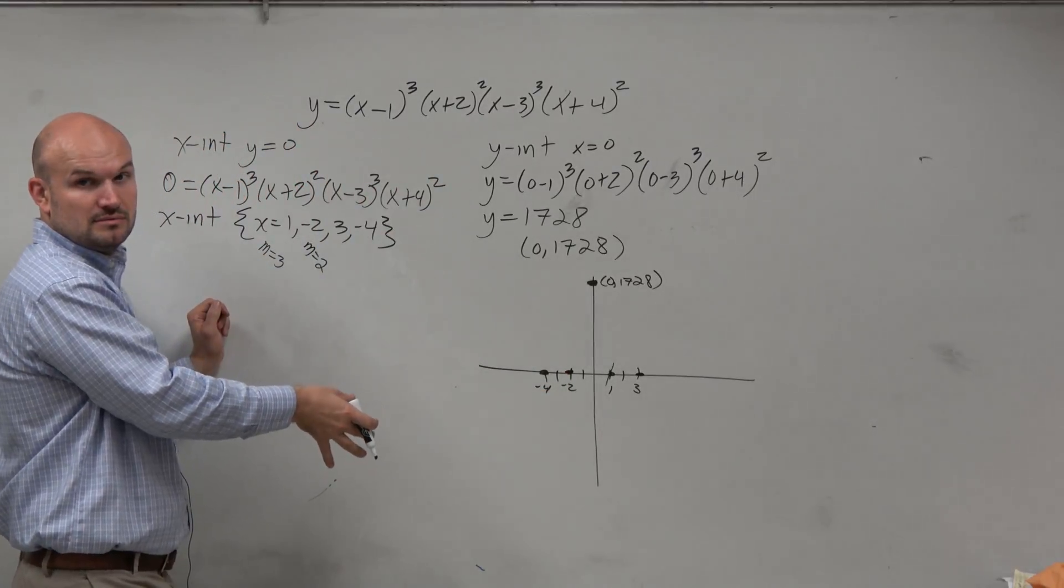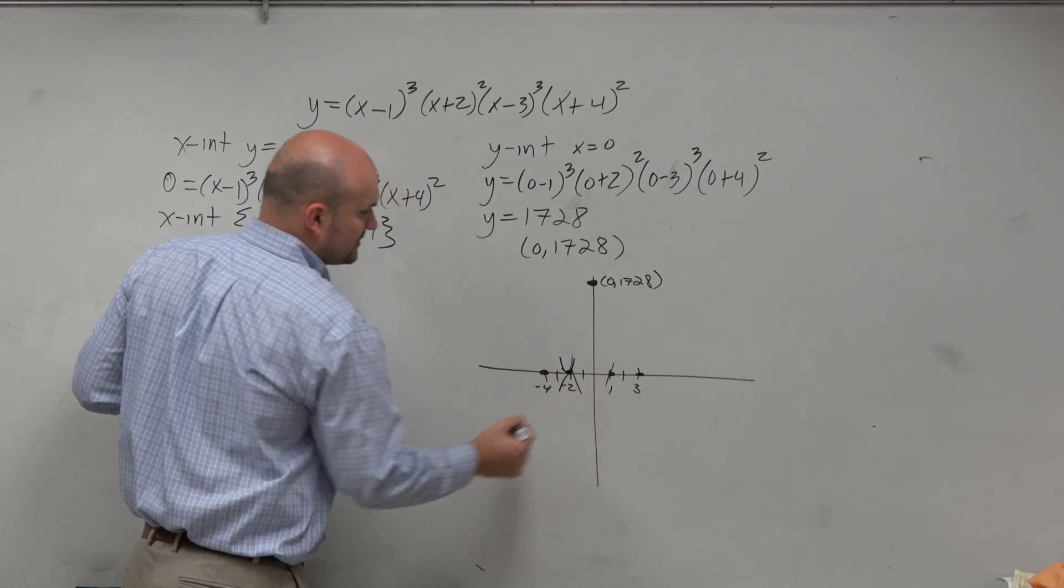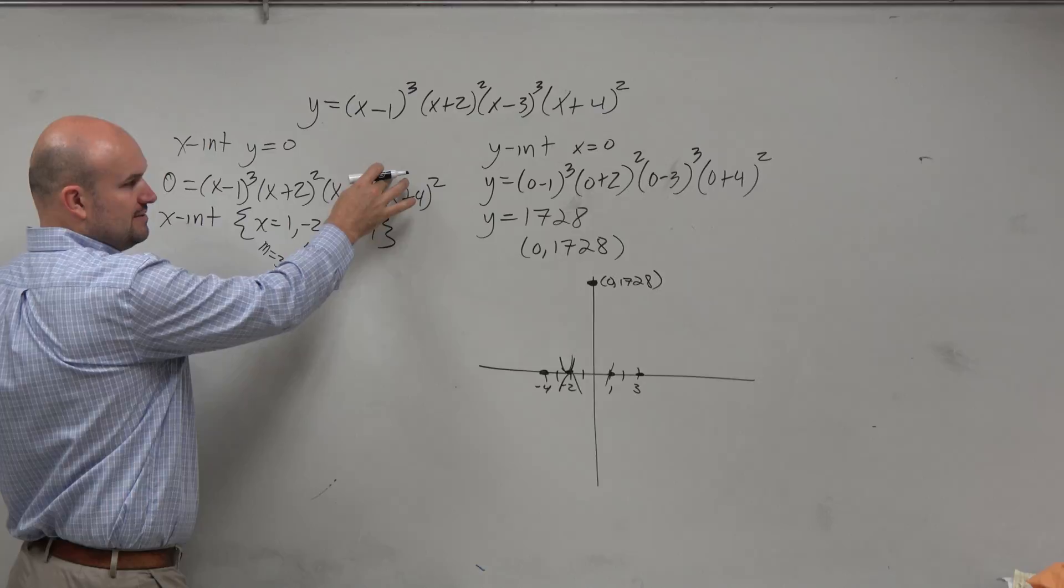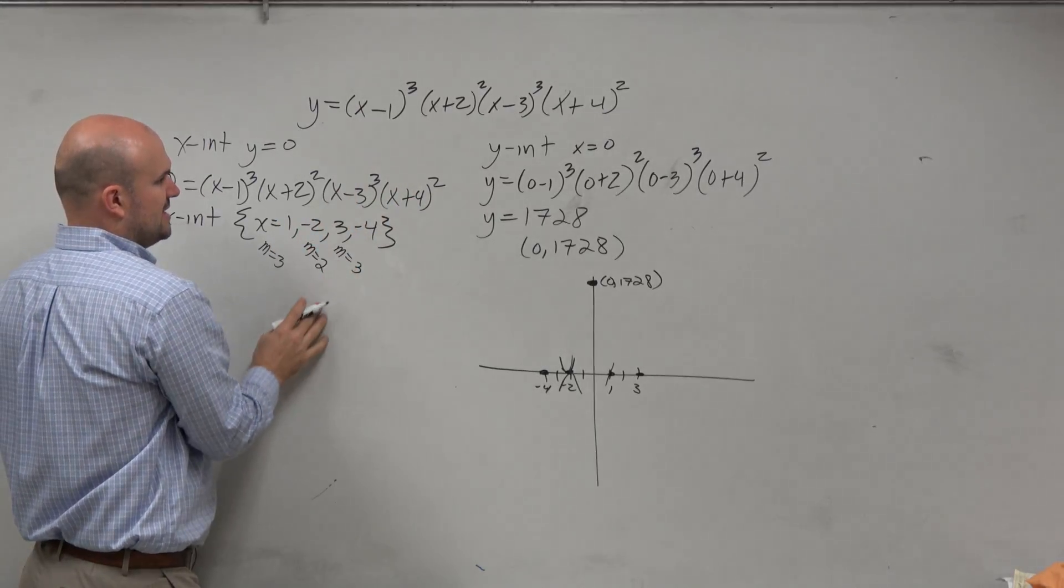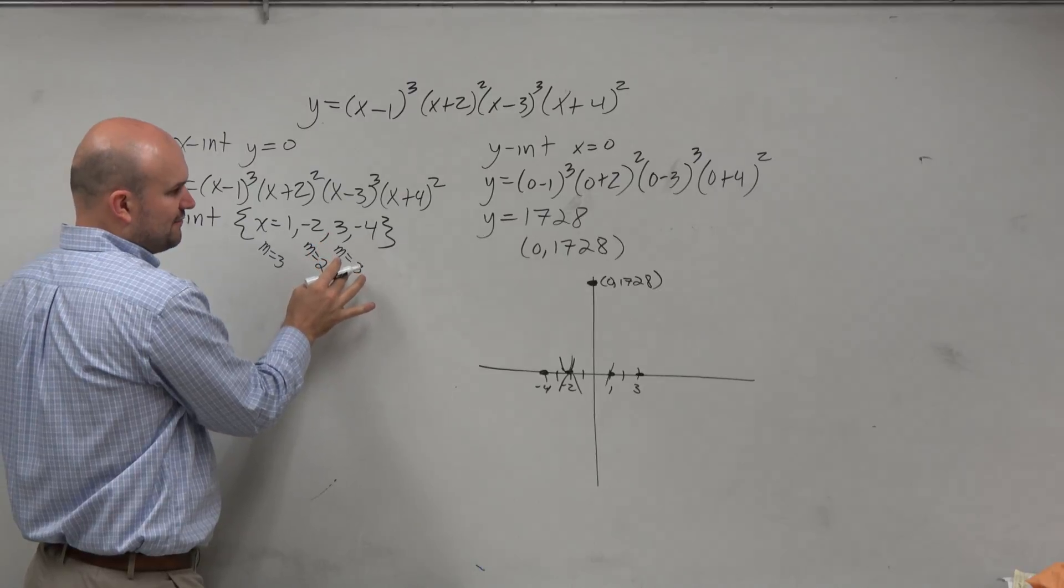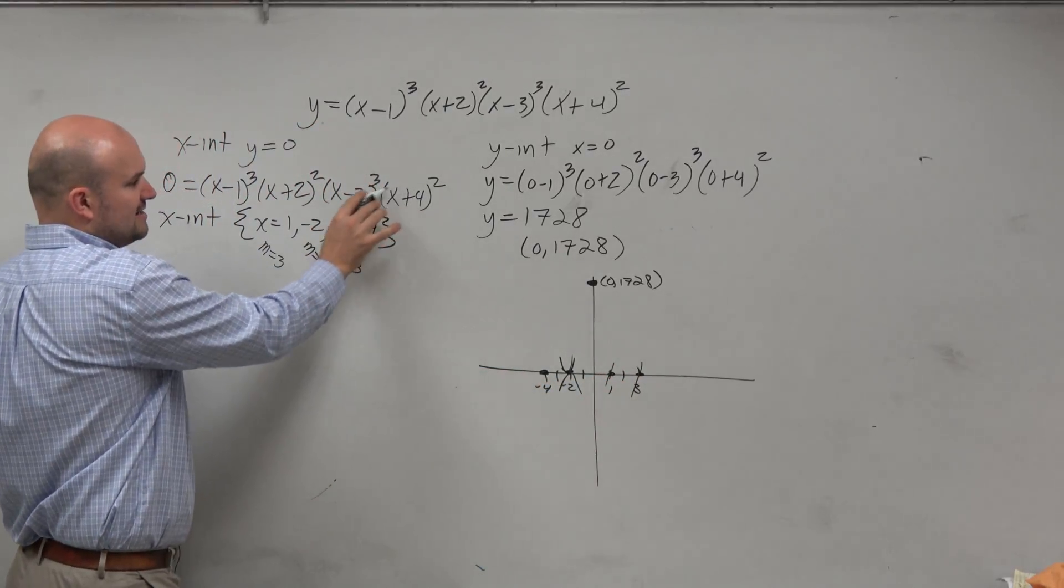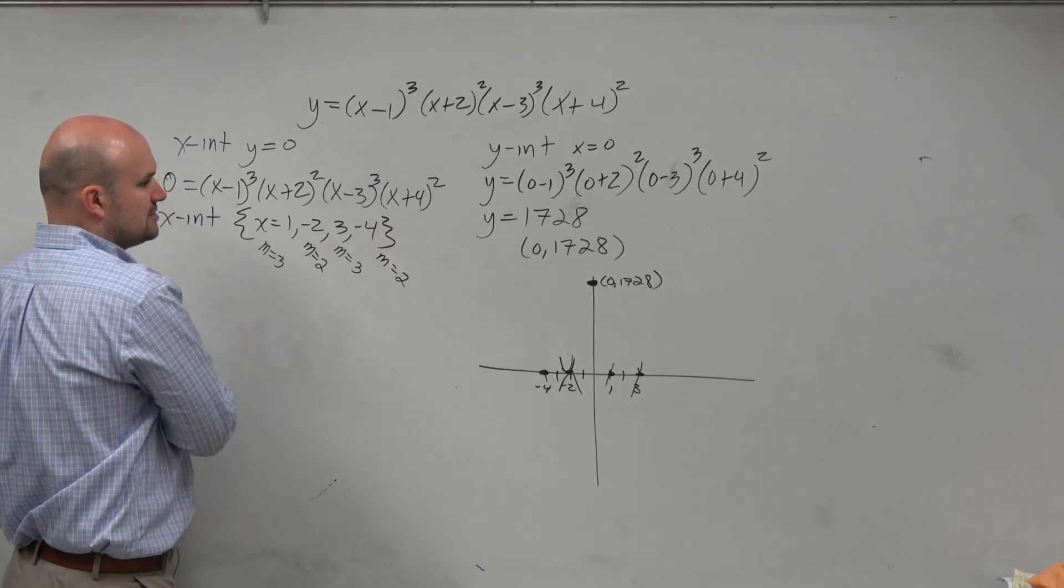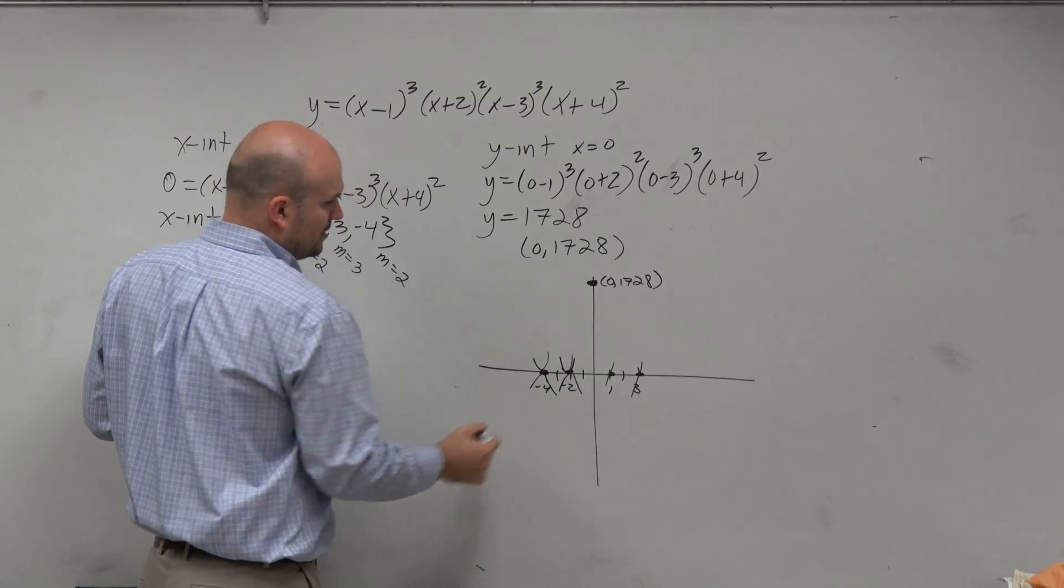Do we know if it bounces up or bounces down? No. So why don't we just do bounce either way for right now? Then we have 3, which has an odd multiplicity of 3. I didn't mean for those to be the same, but it just worked out that way. So therefore, at 3, it's going to cross. And then at negative 4, we have a multiplicity equal to 2. So therefore, it bounces at negative 4. So it bounces either up or down.